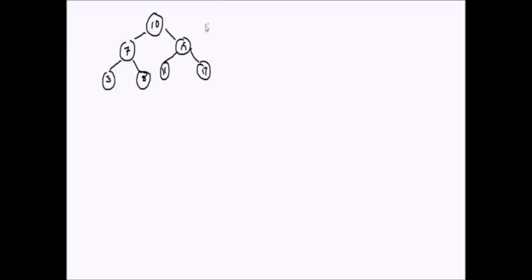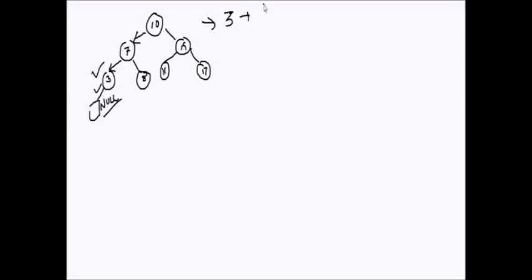How can we do this? Let's take the tree again. From the required output, we know that node 3 is the first node which has to be in the doubly linked list. Hence, we will be traversing left, left, left until we reach 3 and the next left pointer is null. We will stop there and mark 3 as the first node — the head pointer of the doubly linked list.